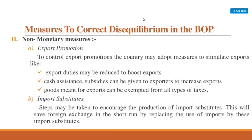Regarding deficit in the balance of payment: the equilibrium of the BOP in a country may be either in the form of deficit or surplus. A surplus in the BOP does not pose much of a problem, but a deficit creates problems. A deficit in the balance of payment account is generated when the total inflow on account of autonomous transactions is less than the total outflow on account of such transactions. Conversely, when total inflow on account of autonomous transactions exceeds total outflow, there is a surplus balance of payment.